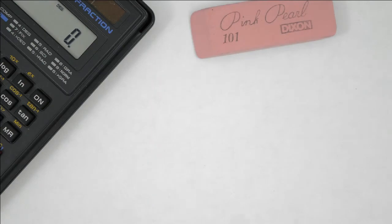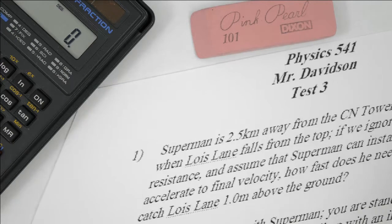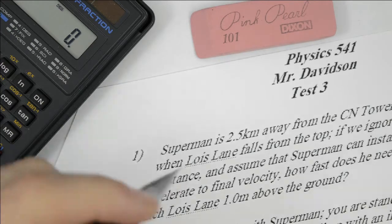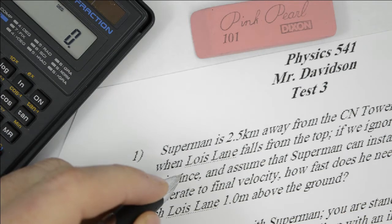So we sit down, we have our calculator and eraser ready to go, we look at the test and we see that Lois Lane is going to fall from the top of the CN Tower. Because, of course, we're in Canada. So how are we going to solve this problem?